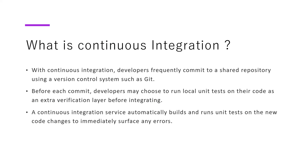First of all, what is continuous integration? Continuous integration means that the developers, whoever are working on the project, are frequently committing their code to a shared repository. That shared repository can be anything — it can be Git or other versioning systems. Essentially, the essence of continuous integration is that as and when changes are made to the code, all the developers are checking and committing to a shared repository so that it is accessible and available to everyone working on that project.